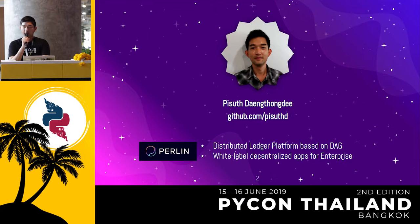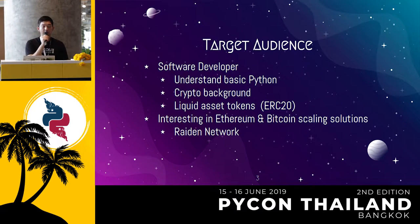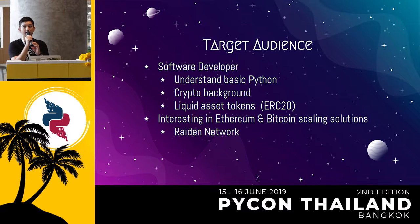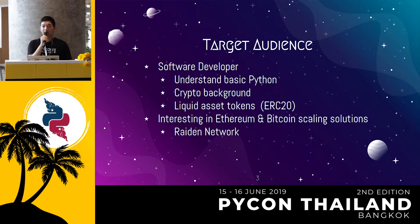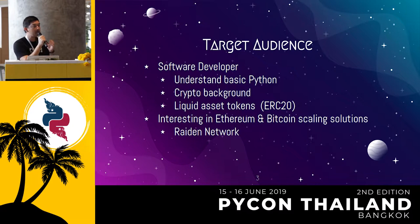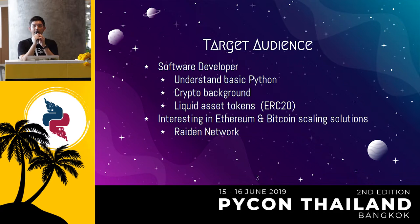At Perlin, we're working on Golang and Rust and React — nothing related to Python. And why I'm going to talk about the Raiden network is because the Raiden network is actually made entirely by Python. If you have the crypto background or you are a developer on the blockchain side, you may know that everyone in this space is using Golang or Rust, but Raiden came out with something different — they're using Python.